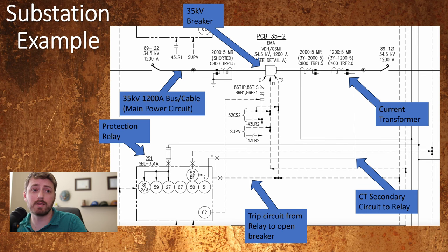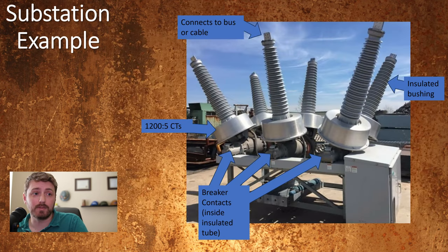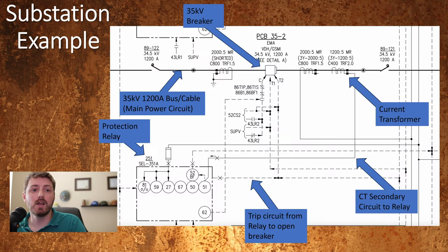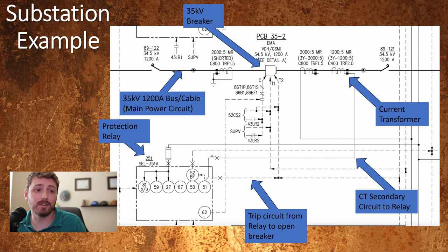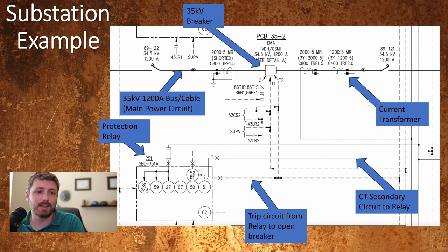Moving back to relays — if we look at this example of a transmission substation, the primary side of the CT, the bus, is at 34.5 kV — that's 35,000 volts — and can carry up to 1,200 amps. It's a lot more power than a thermal breaker can reasonably handle. But on the secondary side of the CT there's much less energy according to the ratio listed here — 1,200 amps on the primary would be about five amps on the secondary. This also provides galvanic isolation from the bus, so we can treat the secondary wiring as safe low-voltage wiring. Low voltage and five-ish amps is a lot easier to deal with and plug into a precision instrument than 35 kV and 1,200 amps.